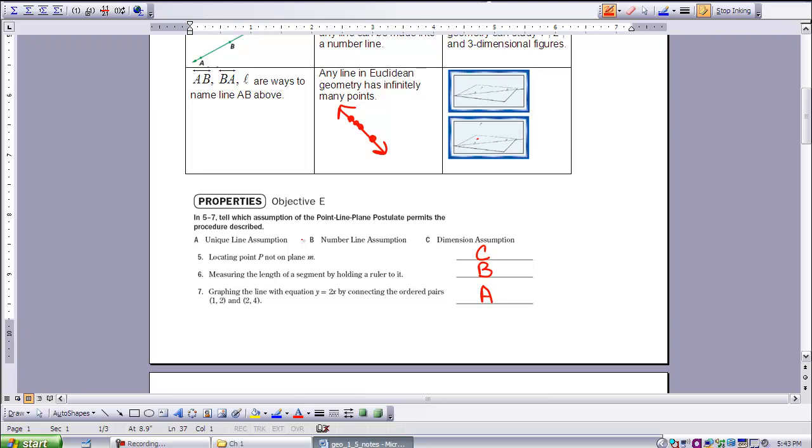Measuring the length of a segment by holding a ruler to it. That's the number line assumption. Every line can have a number correspondence.